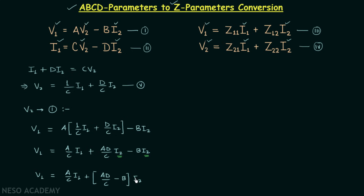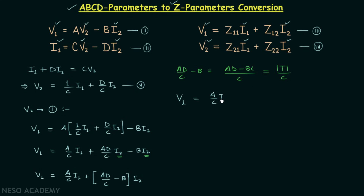Since I2 is common in the last two terms, we factor: V1 = (A/C)I1 + (AD/C − B)I2. The expression AD/C − B can be written as (AD − BC)/C, where AD − BC is the determinant of the transmission parameters matrix. So V1 = (A/C)I1 + (det[T]/C)I2. This is equation 6.